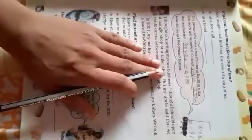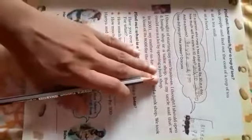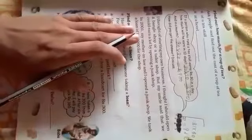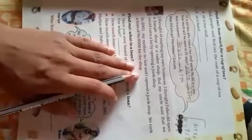What did she tell about herself? Let us see. I thought of starting my own business. I thought I should open a bangle shop or a tailor shop. But my uncle said that we could earn a lot by opening a junk shop. In 2001, my mother-in-law and I opened a junk shop. They started their business. She started her business with her mother-in-law.